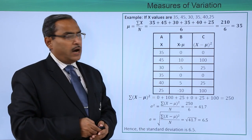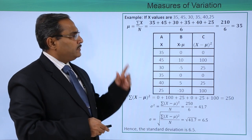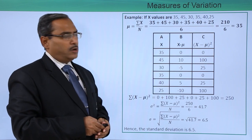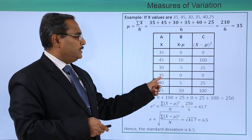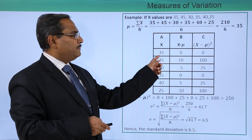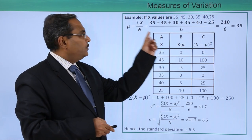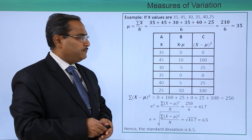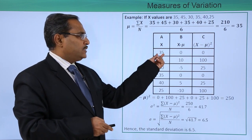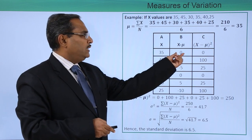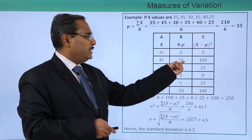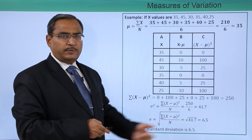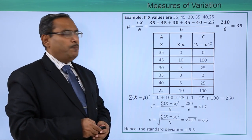For example, suppose the x values are 35, 45, 30, 35, 40, and 25 — these are 6 values. First, we calculate the mean, which comes out to 35. Then we calculate x minus mu for each value — for example, 35 minus 35, 45 minus 35, and so on — and then we square each of those differences.